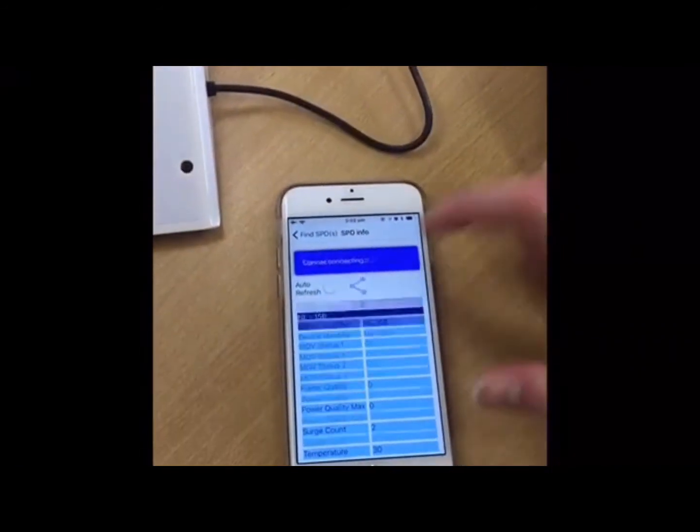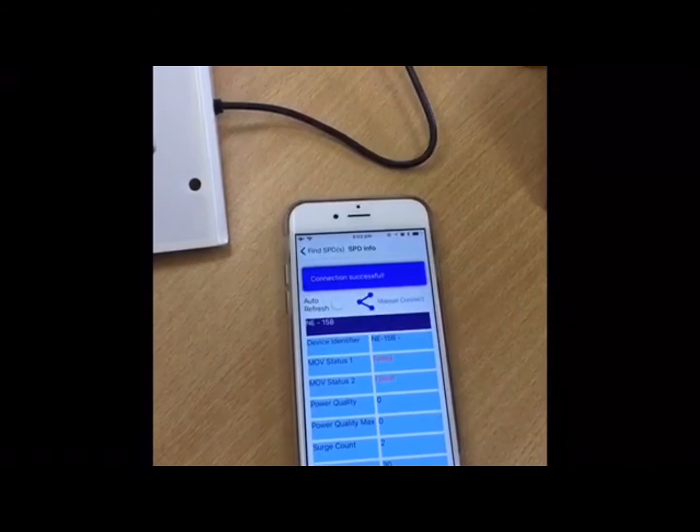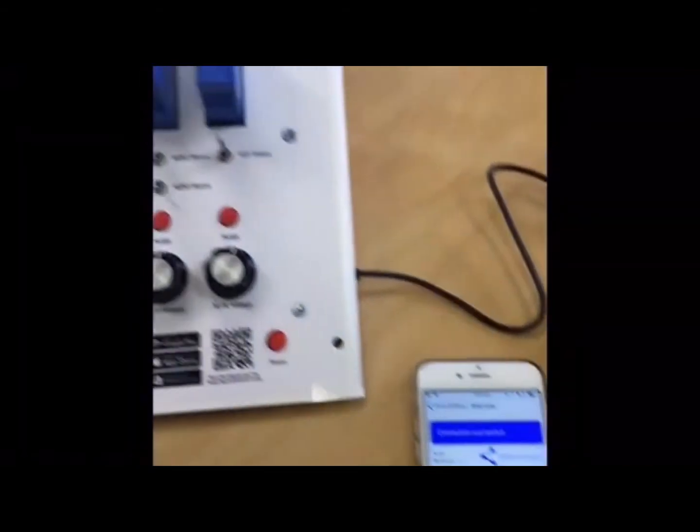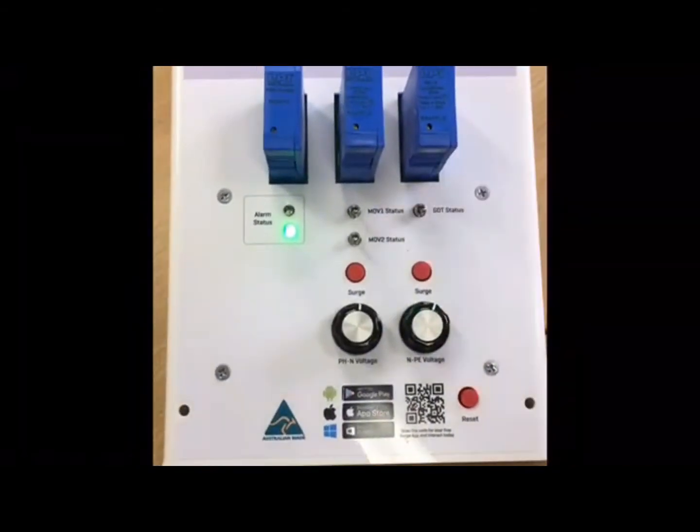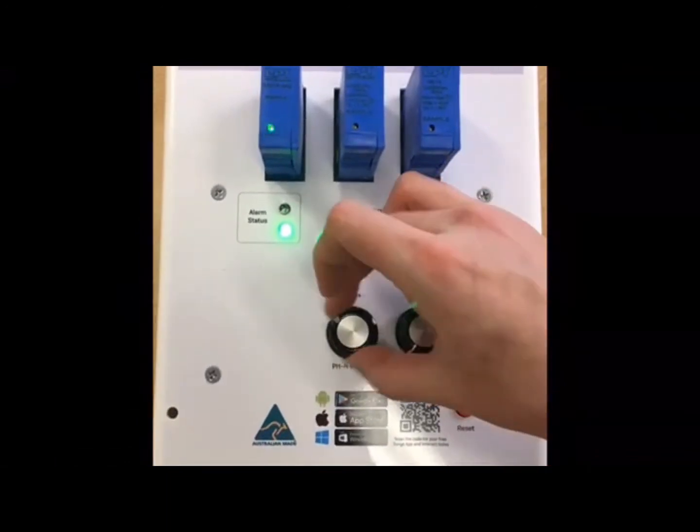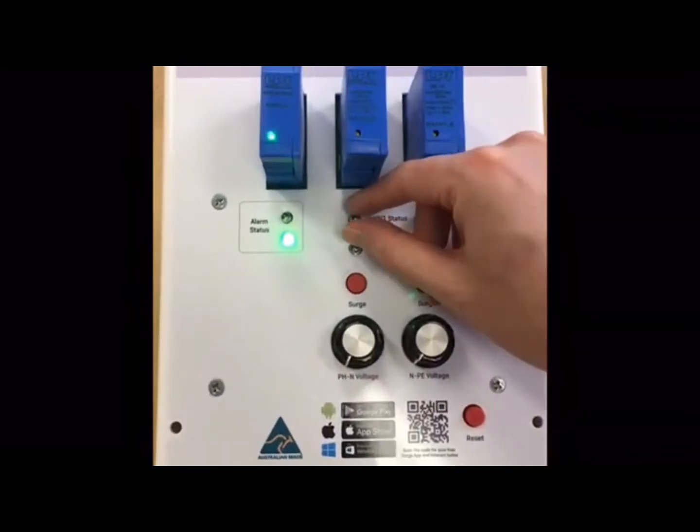Now we will show what happens when all units are failed. There may be a lag time of up to 30 seconds. The blue LED on the units indicates comms in progress.